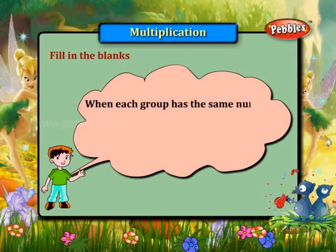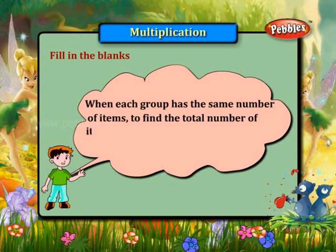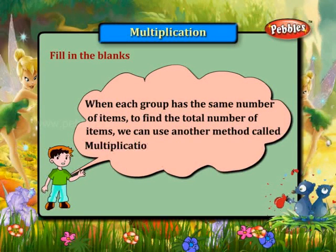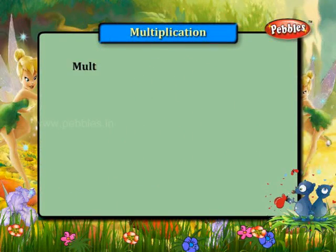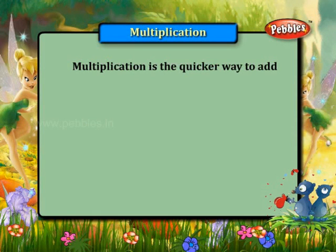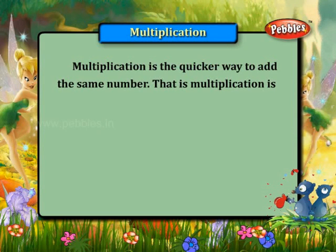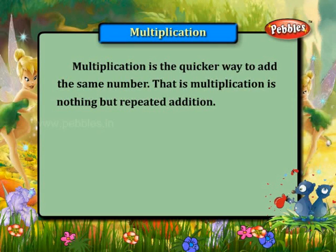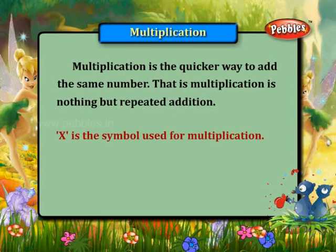When each group has the same number of items, to find the total number of items we can use another method called multiplication. Multiplication is the quicker way to add the same number — that is, multiplication is nothing but repeated addition. The symbol used for multiplication is 'into'.